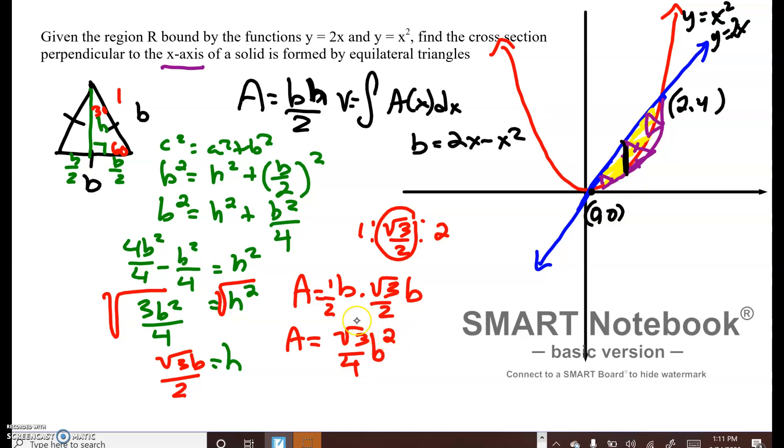Now I have my area in terms of solely one variable, and we defined b as 2x minus x squared. My volume formula is the integral of radical 3 over 4, and I'm going to replace b with 2x minus x squared dx. Since everything's with respect to x, I use only the x-coordinates for the intersection points, from 0 to 2.